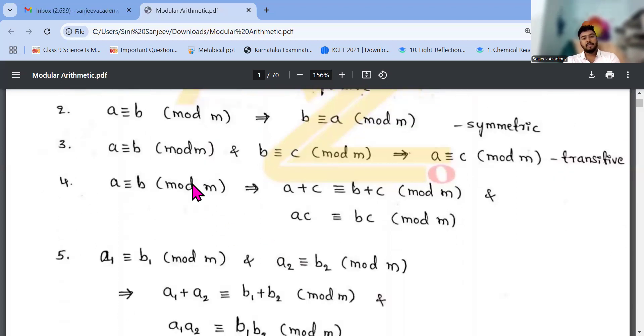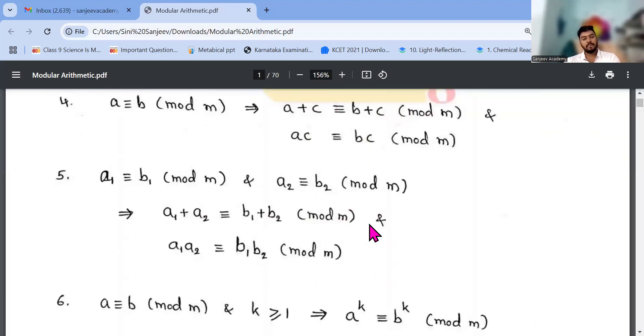a congruent to b mod m, that is a plus c, these are the properties, equals b plus c, and ac congruent to bc. Fifth one, a1 plus a2 equals b1 plus b2, a1 times a2 equals b1 times b2.